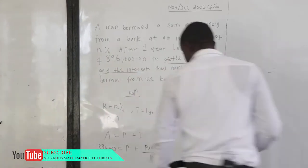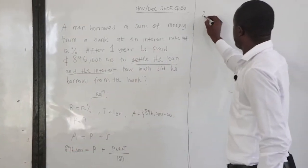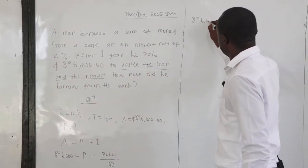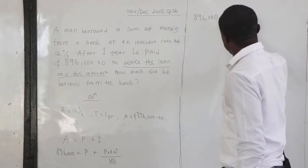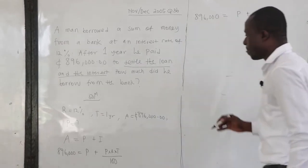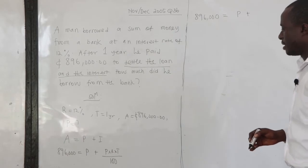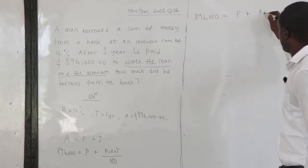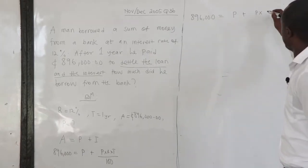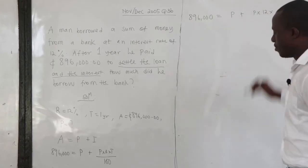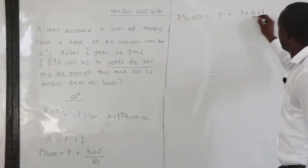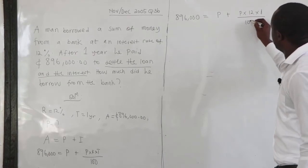Now, let's substitute the values. So we have $896,000. Principal, we don't know. That is what we are looking for. Now, what is the principal? We don't know. But what is our rate? Our rate is 12. What is our time? Our time is 1, all over 100.